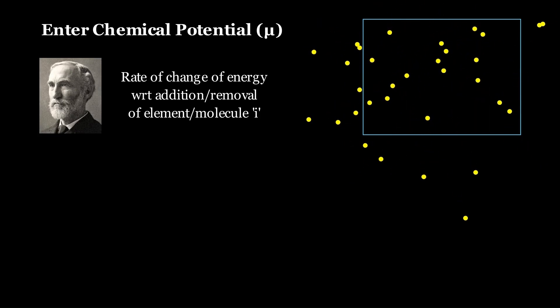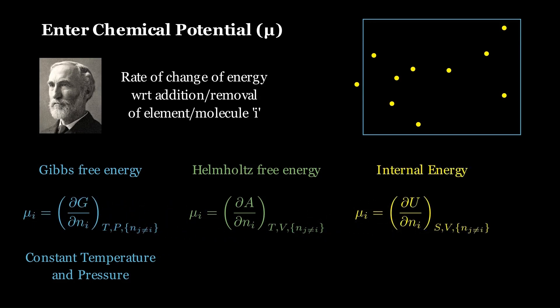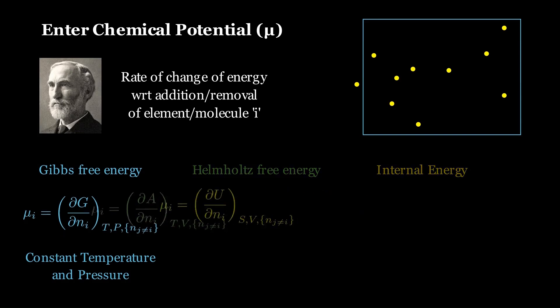If the relevant energy is the Gibbs free energy, then μ is the partial derivative of G with respect to n_i at constant temperature and pressure. Change the constraints, and you change the potential. Same μ-n derivative. At constant temperature and volume, it's derivative of Helmholtz energy A with respect to n_i. At constant entropy and volume, it's derivative of internal energy U with respect to n_i. Different thermodynamic potentials, different variables locked, but same physical meaning.